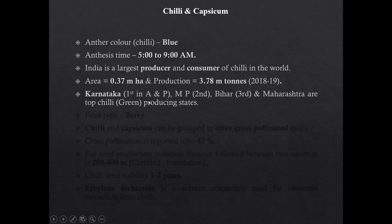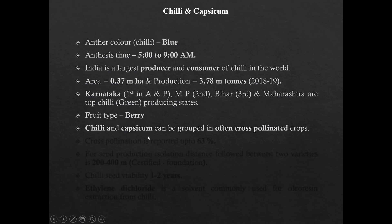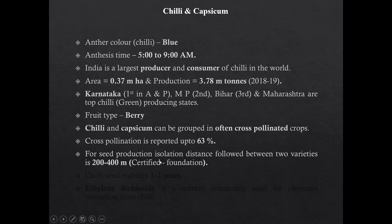Top chili producing states in India are Karnataka, MP, Bihar and Maharashtra. Karnataka is first in area and production of green chili. Fruit type of chili is berry. Chili and capsicum can be grouped as often cross-pollinated crops. Cross pollination in chili is reported up to 63%. For seed production, isolation distance maintained between two varieties of chilies is 200 to 400 meters — 200 meters for certified seed and 400 meters for foundation seed.